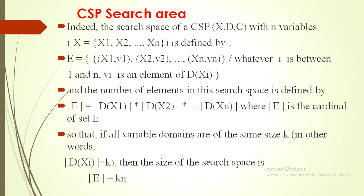We can call it the cardinal of the set because it is the number of elements in this search area. The search space is a set of points which is formed, the number is equal to the product of the cardinal of each set D(Xi). So that if all variable domains are of the same size k, in other words, the cardinal of D(Xi) equals k, the size of the search space is k^n.